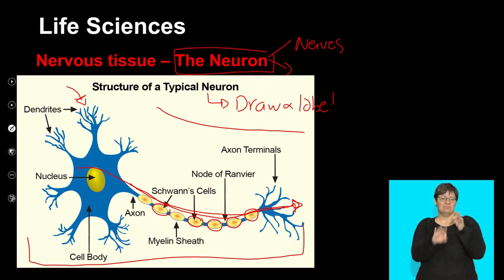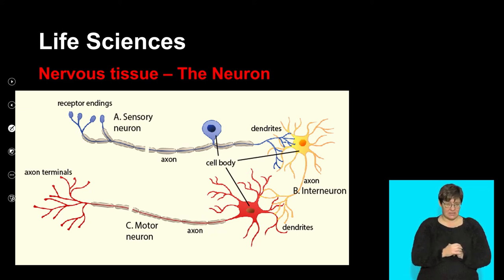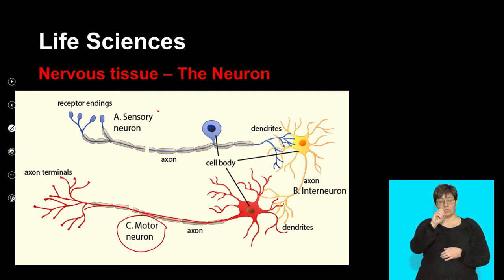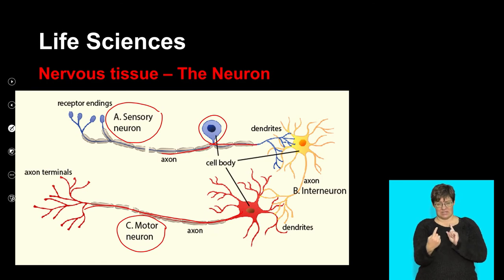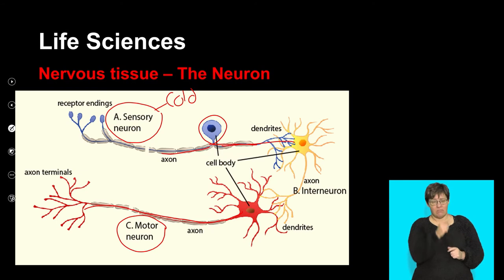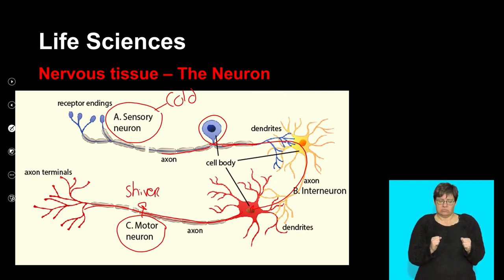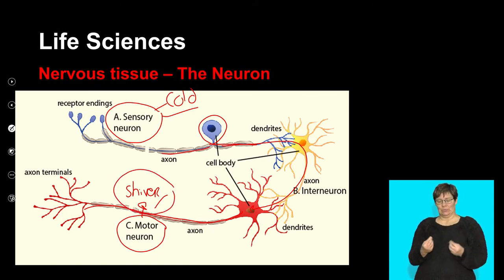When it comes to this type of mammalian tissue, you need to be able to draw and label the neuron — it's one of the simpler tissues to draw. There are three types of neurons, but the two main ones are the motor neuron and the sensory neuron, which have slightly different functions. For example, if it is cold outside, your sensory neuron tells you it's cold, the signal goes to your brain, and the brain sends a message back: you're cold, let's start to shiver. So you sense something and then you do something about it.